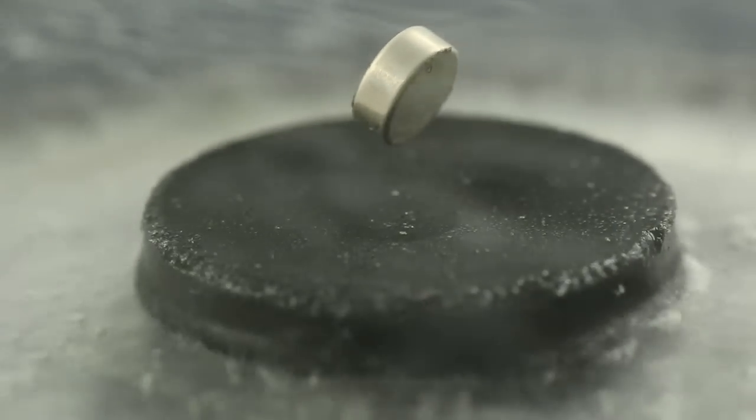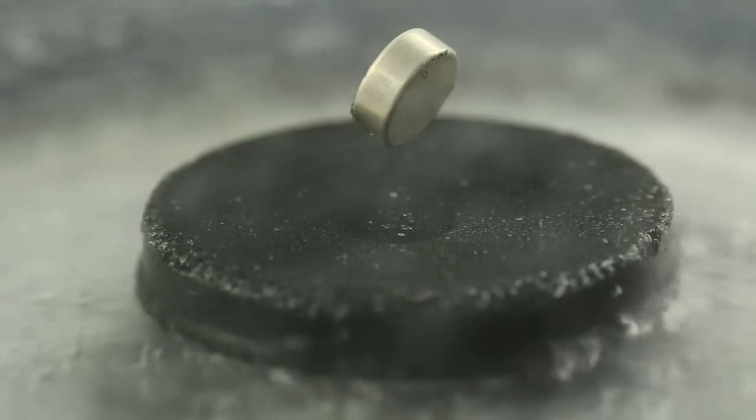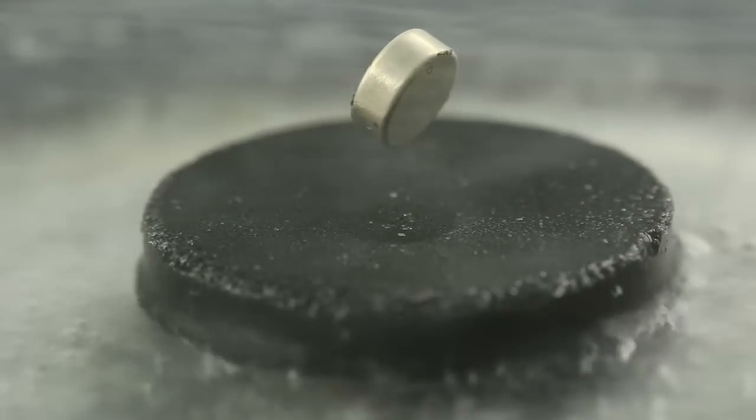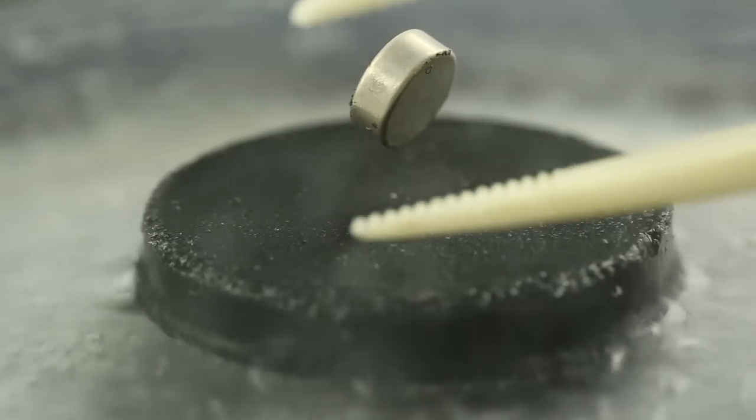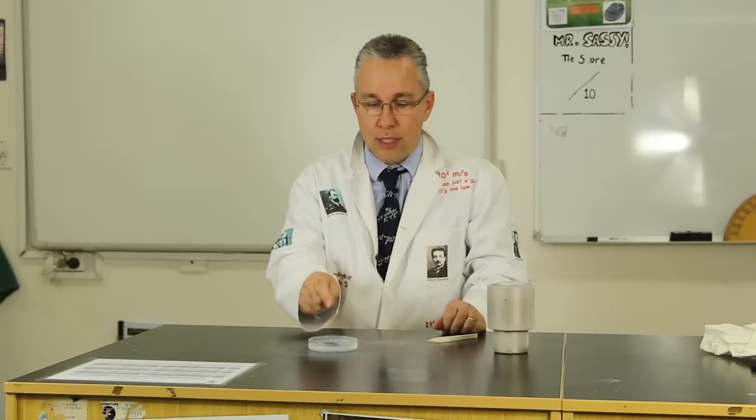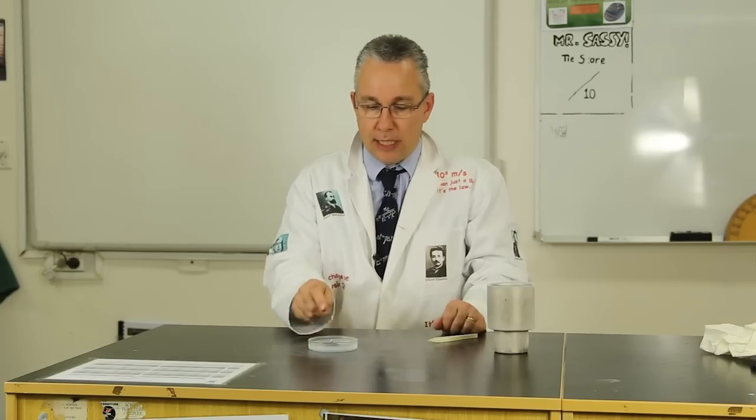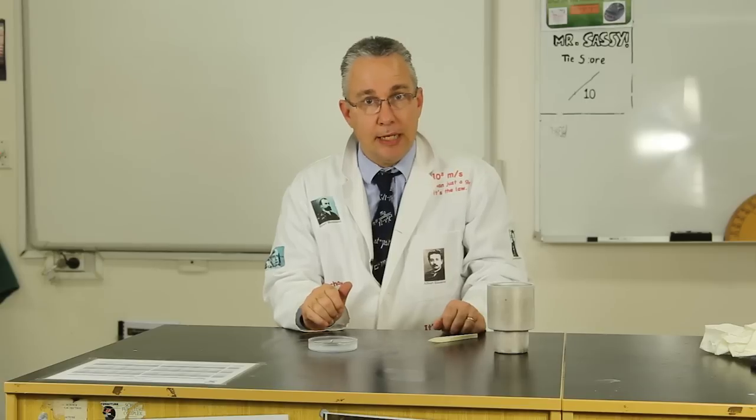So as you can see what's happening here is it levitates due to Lenz's law in essence. What is happening is that eddy currents are formed and those eddy currents will always go in the direction so that it produces a magnetic field that opposes the change in flux that generates it. And so if the north is facing down of the magnet, the eddy currents will be such in this direction that it'll create a north pole facing up and therefore levitate the magnet.